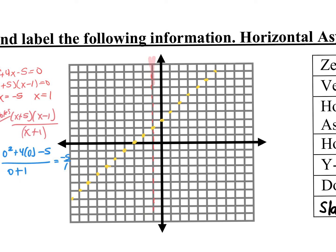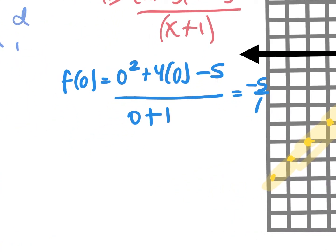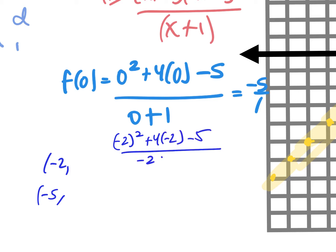Do you guys see this is my vertical asymptote and this is my slant asymptote? Pick two points to the left of the vertical asymptote: negative 2 and negative 5. When I plug in negative 2: negative 2 squared plus 4 times negative 2 minus 5 over negative 2 plus 1.